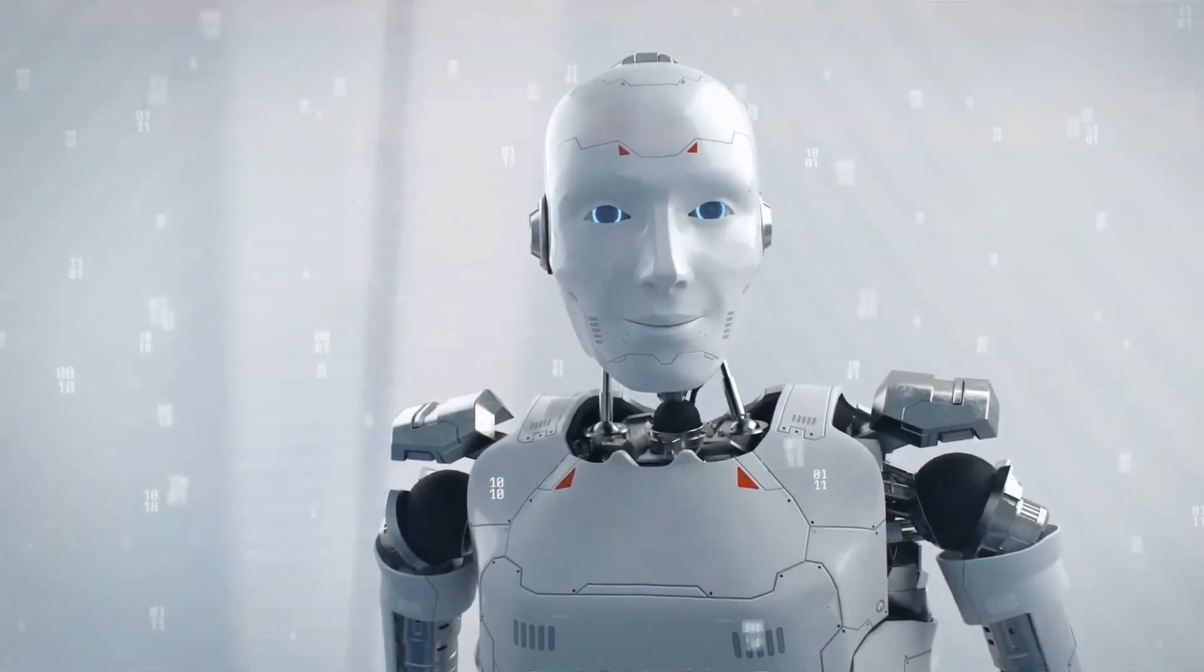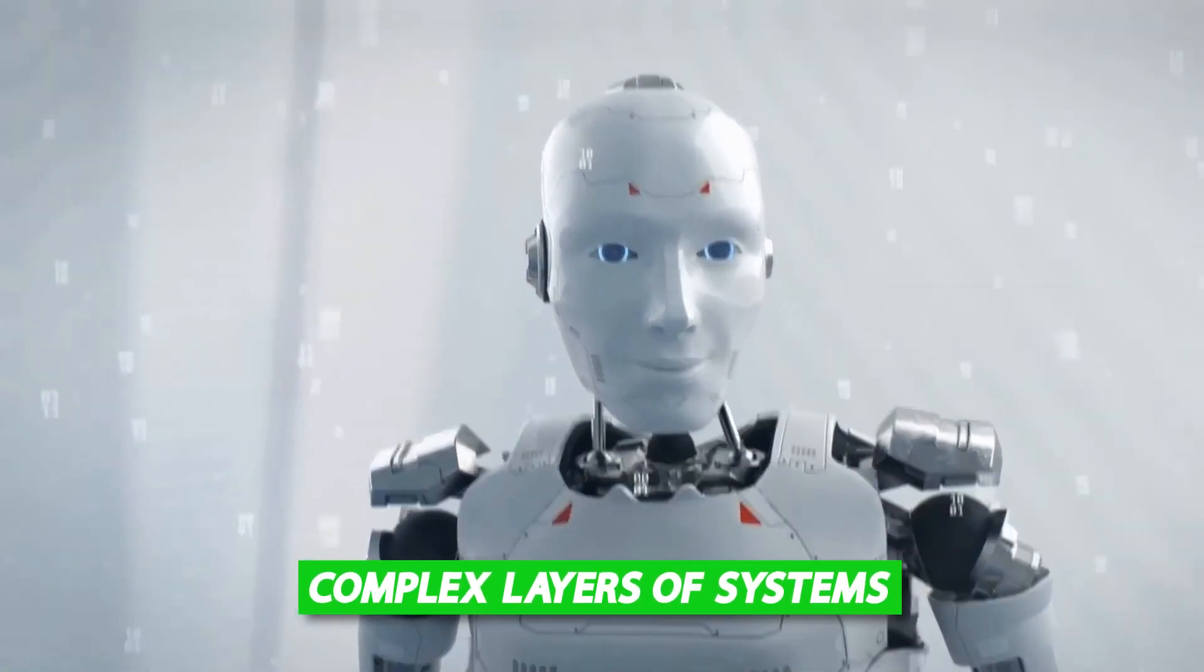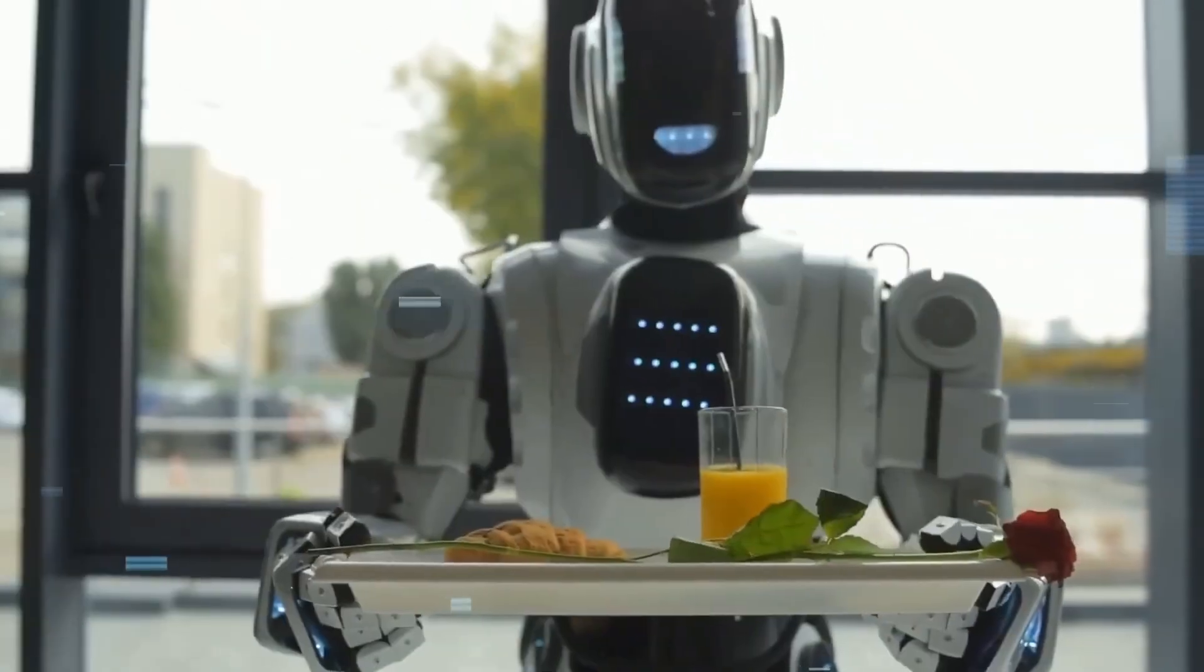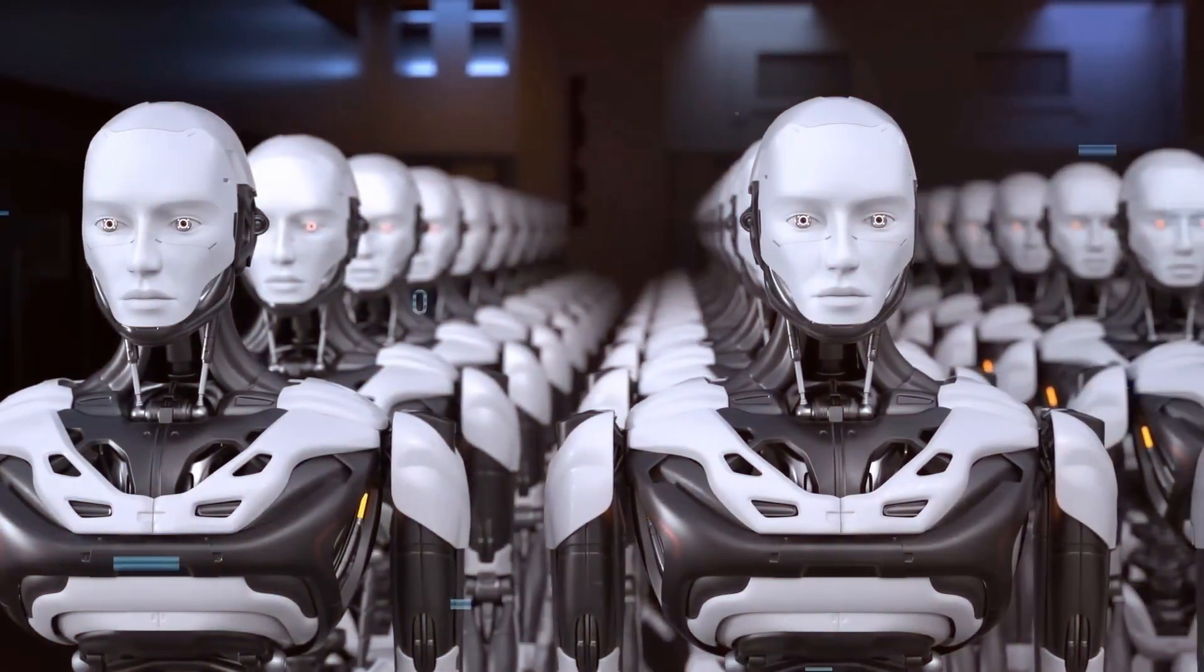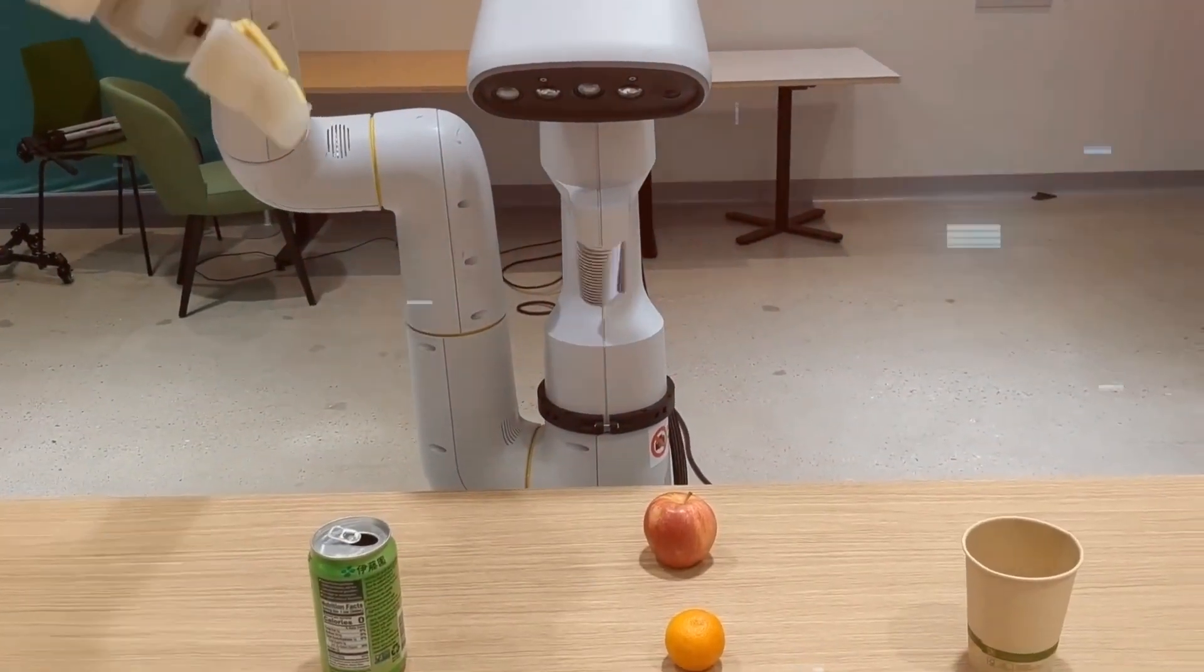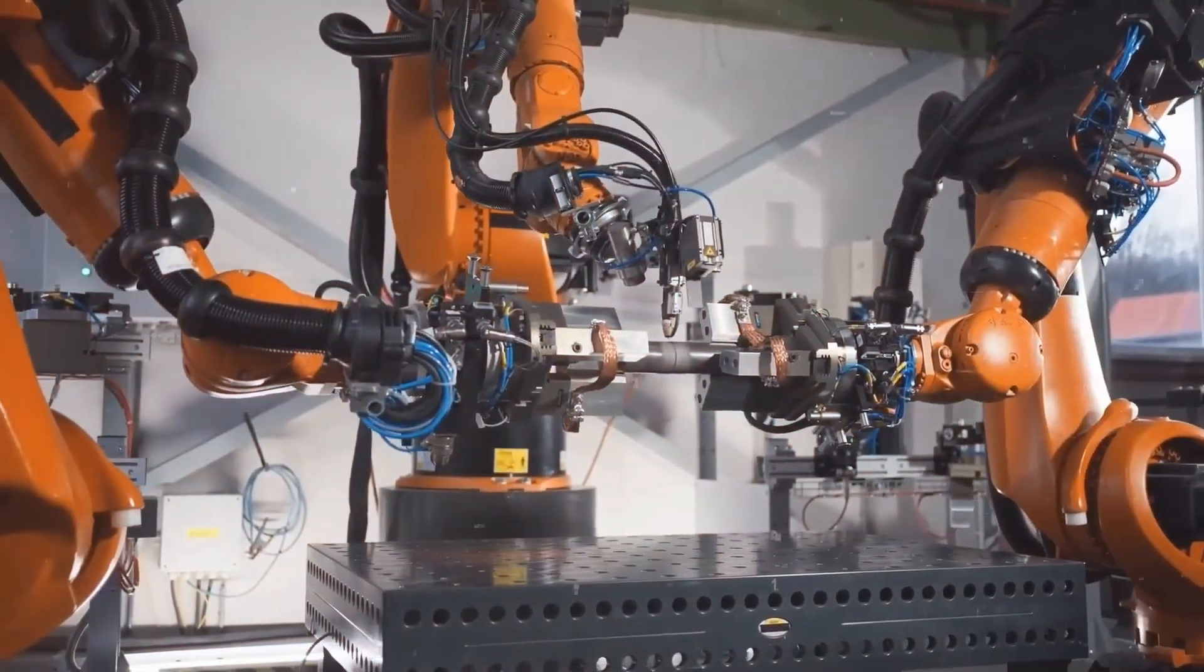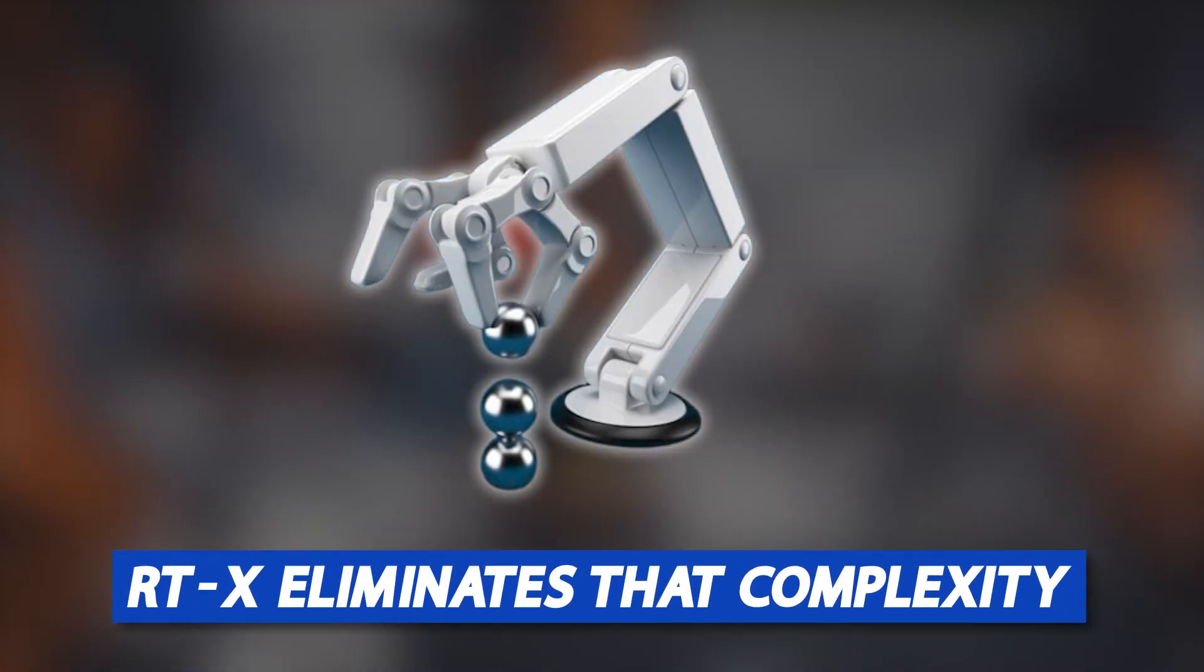Until now, however, robots were powered by complex layers of systems, with high-level reasoning and low-level manipulation systems operating the robot in an imprecise game of telephone. Consider thinking about what you want to accomplish and then needing to communicate those movements to the rest of your body in order for it to move. RTX eliminates that complexity.